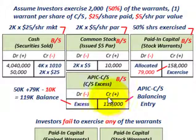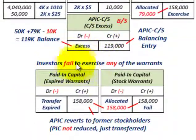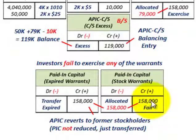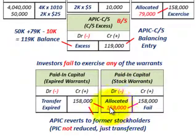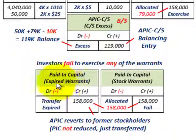That takes care of Case 1 — exercising 50% of the stock warrants. For Case 2, we assume investors failed to exercise any of the warrants. We had paid-in capital for stock warrants credited at $158,000. Since the warrants are not used, we debit paid-in capital for stock warrants by $158,000 and credit paid-in capital for expired warrants by $158,000. This is simply a bookkeeping transfer entry.